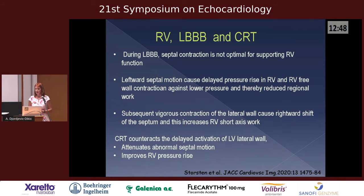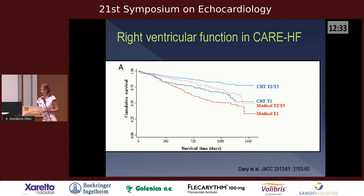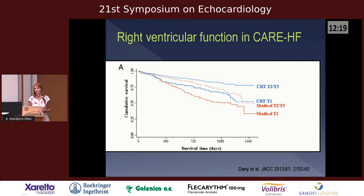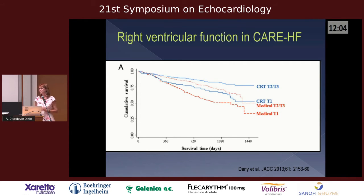CRT restores all of that — it attenuates abnormal septal motion and improves the right ventricular pressure rise. However, there is a problem if right ventricular failure already exists. This was shown in the CARE-HF study, where RV function was measured by TAPSE — tricuspid annular plane systolic excursion — and a TAPSE lower than 14 millimeters was associated with worse survival.